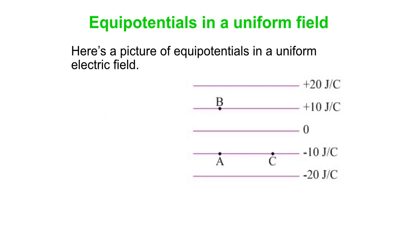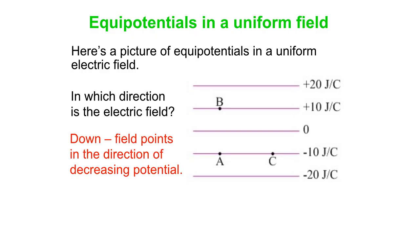Here's a picture of equipotentials in a uniform electric field. We could label these as plus 20 volts, plus 10 volts, etc. But an equivalent unit is the joule per coulomb. In which direction is the electric field? The electric field points in the direction of decreasing potential. You can see the potential decreases downwards. This is a uniform downward-directed electric field.